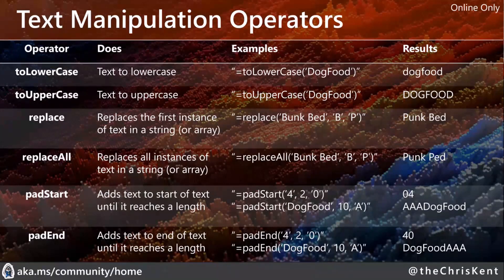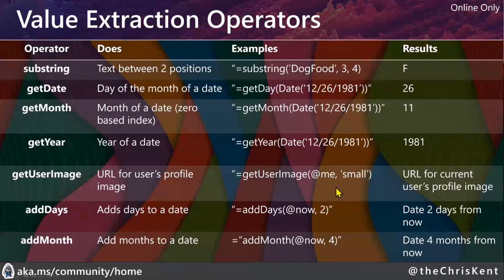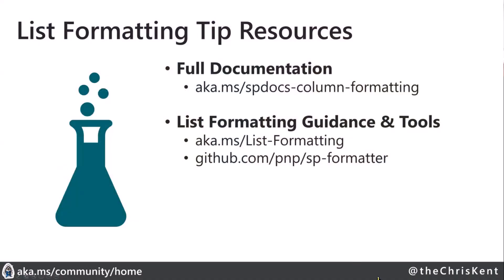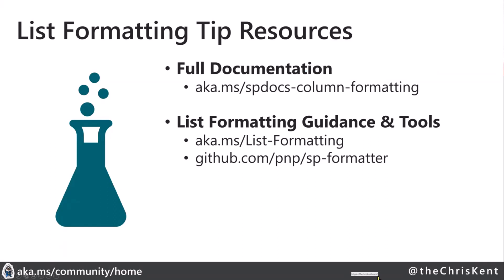Finally there are text manipulation operators — you can change strings around, make things uppercase to shout at people, or add padding to the beginning. Padding numbers so they line up is a very common use case; just wrap a toString conversion around your number and you're good. Then there are value extraction operators to grab specific details out of a value, whether calculated or field values. All of this is extremely powerful. Expressions aren't as scary as you think — they're actually easier to write than calculated columns, similar to Power Fx. Check those out, and reach out if you have any questions.